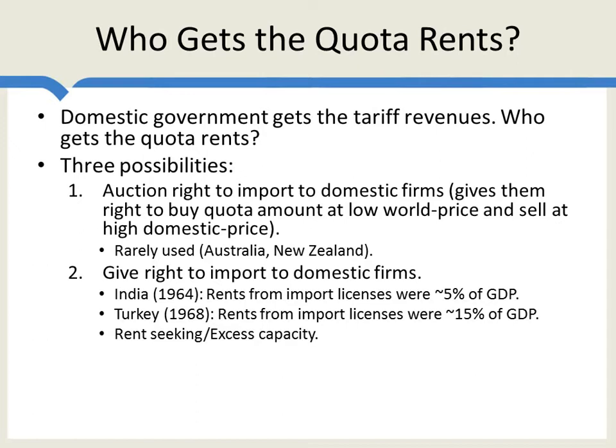Another way rents can be dissipated is through excess capacity. For example, if the government gives rents in proportion to how much domestic firms are already producing, this gives firms an incentive to build overcapacity — wasted investment in capacity designed simply to grab up those rents.